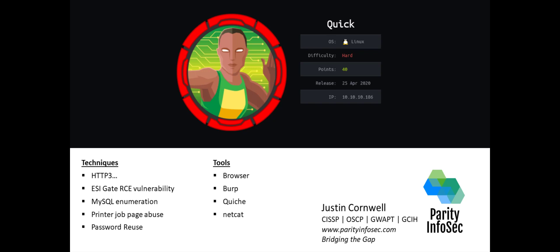I found a way to use MySQL to pivot into the second user — I'll show you how to insert into a database and trick some PHP code to allow yourself to be that next user. Once you're in, you'll use a print job page to pass data to our client and use information from enumeration to get some more password reuse. The tools needed are just a browser, Burp, quiche for HTTP/3, optionally curl dev, and netcat.